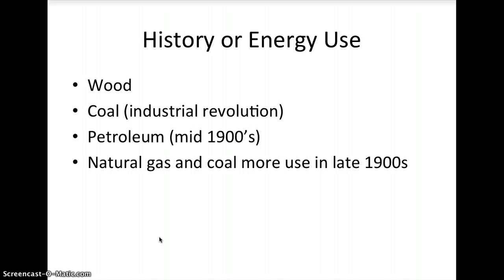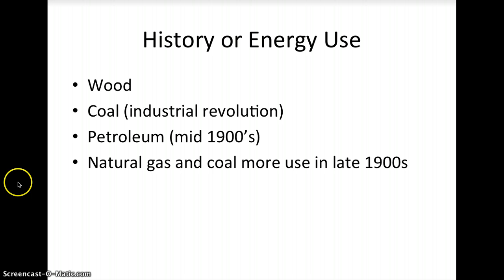A brief history of energy use: the first primitive humans discovered fire and used wood as their energy source, burning it to produce heat. Next came coal during the Industrial Revolution — coal is densely packed with energy, much better than wood for producing a lot of energy at once. Then we found petroleum, or oil, around the mid-1900s — it had different uses, was an easy form of energy with high net yield. More recently, in the late 1900s, we've started using natural gas a bit more alongside coal and petroleum.